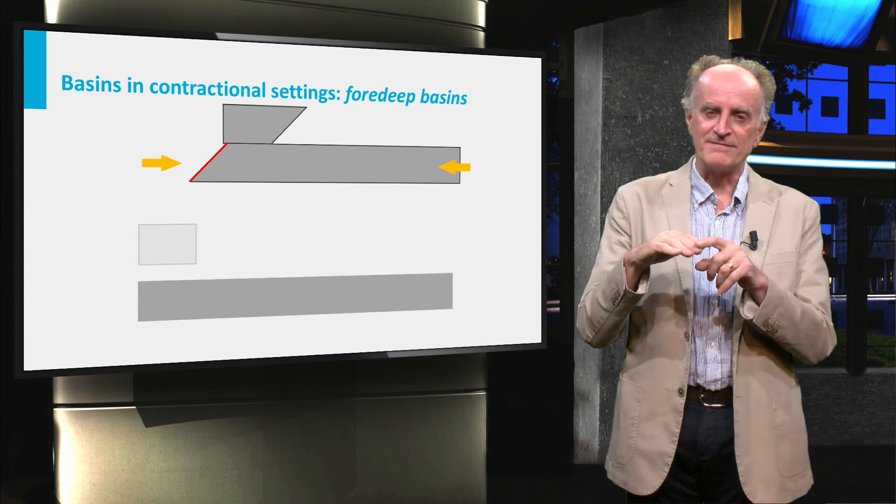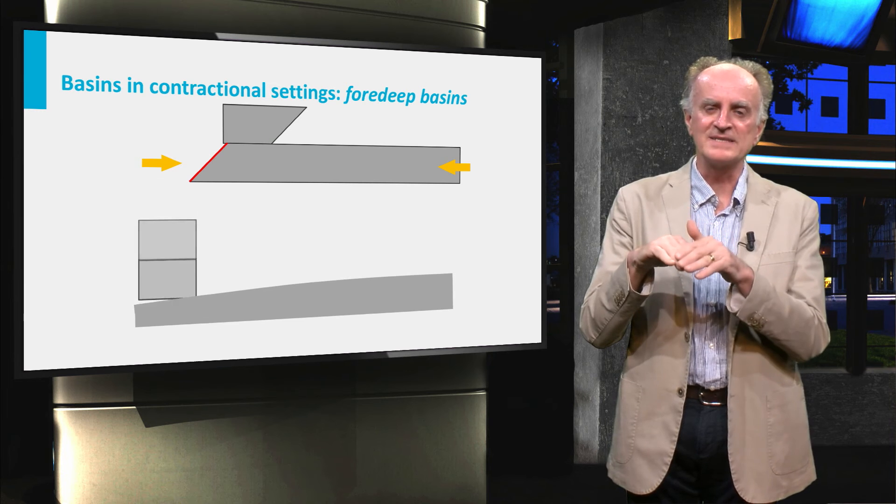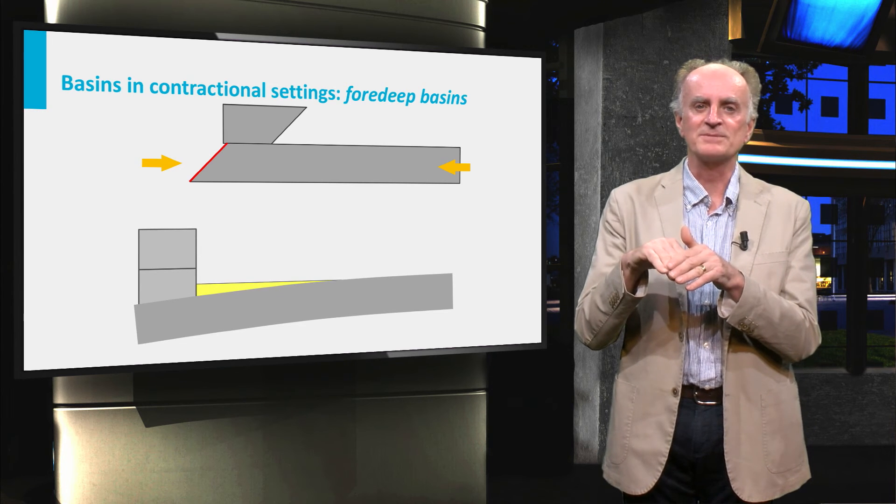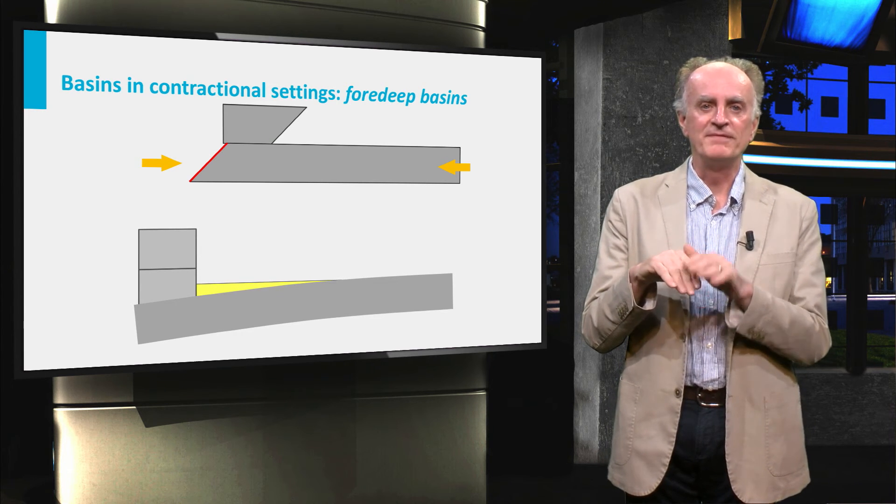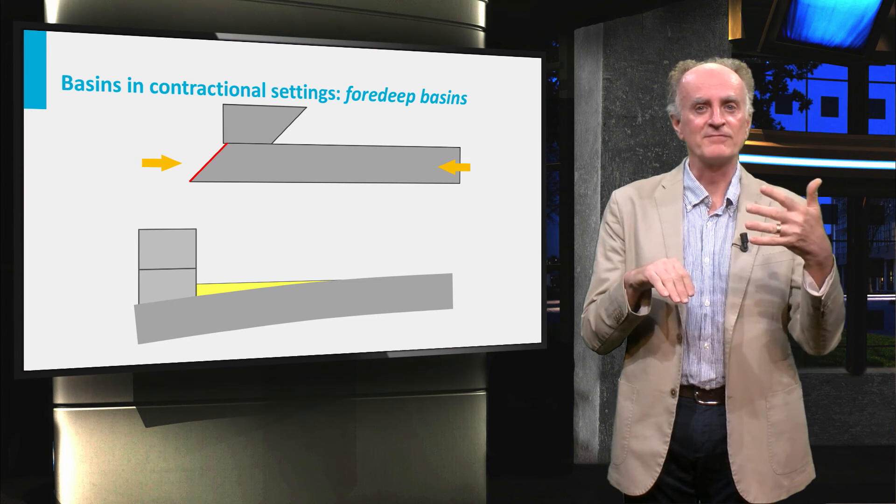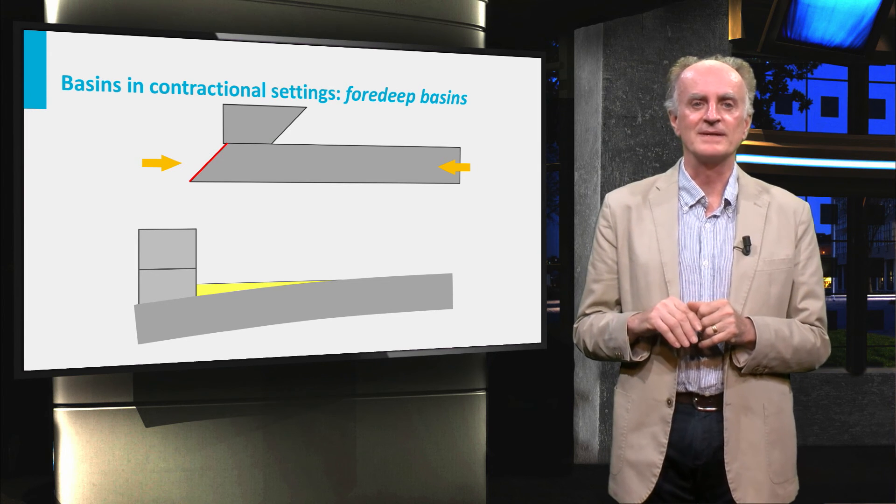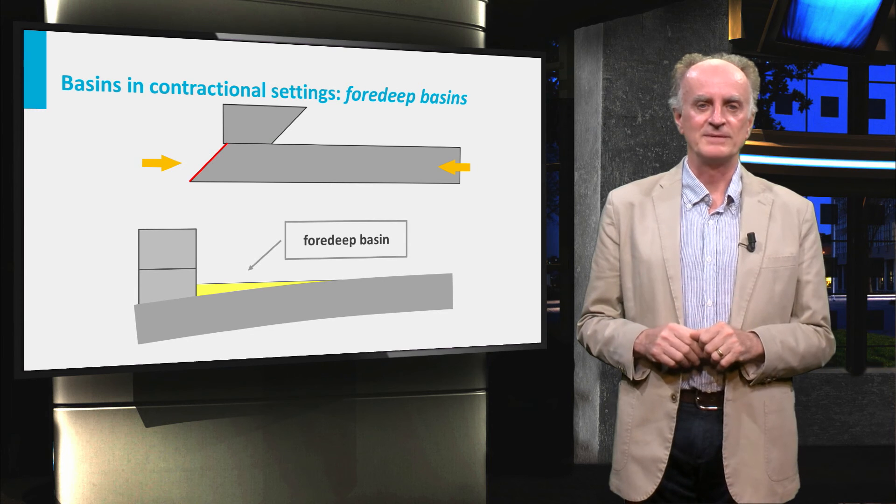If the lithospheric plate has a finite strength, then it will flex downward, create accommodation space which might then be filled with sediments, probably derived from the eroding adjacent mountain belt. This is the foreland basin.